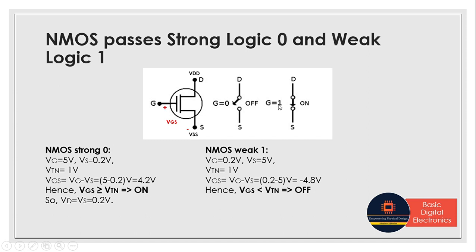Whenever we apply high input voltage (G = 1), a closed circuit is formed between drain and source. Current flows from drain to source because drain is connected to the higher potential. Whatever the source value is, that exact value is passed to the drain terminal. So VD = VS = 0.2 V — meaning exactly the same low value is passed to VD. Hence NMOS passes strong logic 0 at high input voltage.